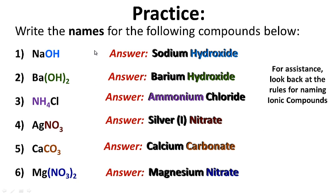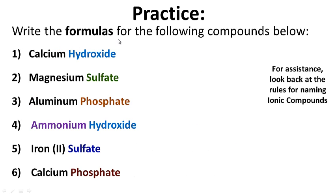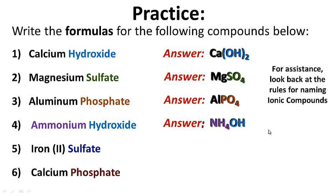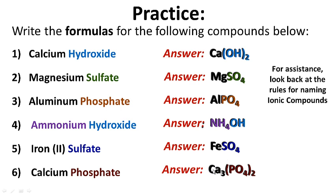Now write the formulas for the following compounds. The answers are: number one, calcium hydroxide Ca(OH)2; number two, magnesium sulfate MgSO4; number three, aluminum phosphate AlPO4; number four, ammonium hydroxide; number five, iron sulfate; and number six — a tough one — calcium phosphate Ca3(PO4)2.